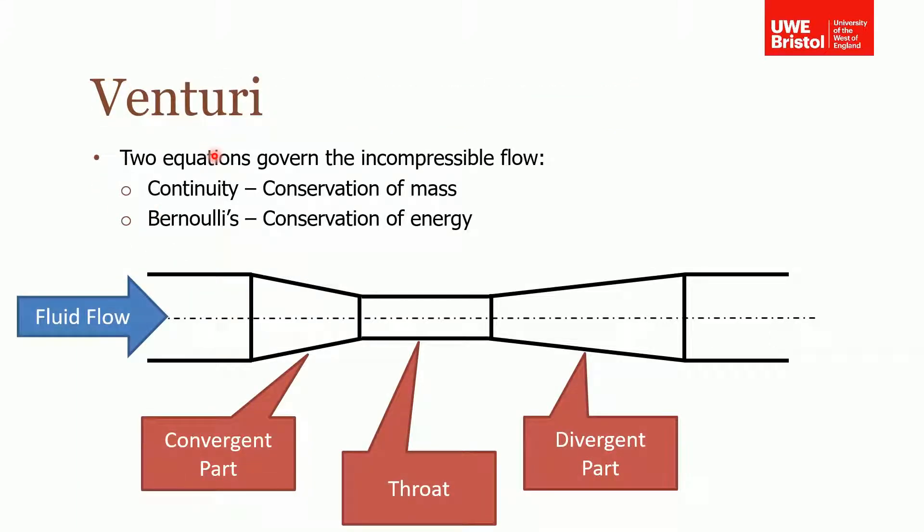Okay, so the first one we're going to cover is the venturi. Here's a schematic of a venturi. Fluid flow is going from left to right, and a venturi typically is made up of three parts. There's a convergent part, so you can see that it goes from this larger diameter down to this smaller diameter. The narrowest area in the venturi is termed the throat, and then from the throat it diverges in the divergent part back up to the original inlet diameter.